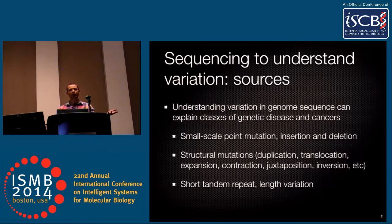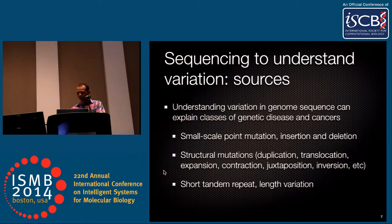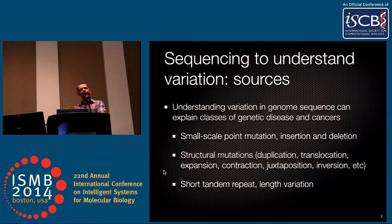We often make calls on variation on the basis of a population of genomes. Sources of variation include small-scale or large-scale structural mutations, which can be deleterious or favored by natural selection. We're interested in short tandem repeats and a particular type of variation we refer to as length variation — expansion or contraction of repeat sequence. If you're interested in this type of sequence variation, you should pay careful attention to all stages of a sequencing pipeline.